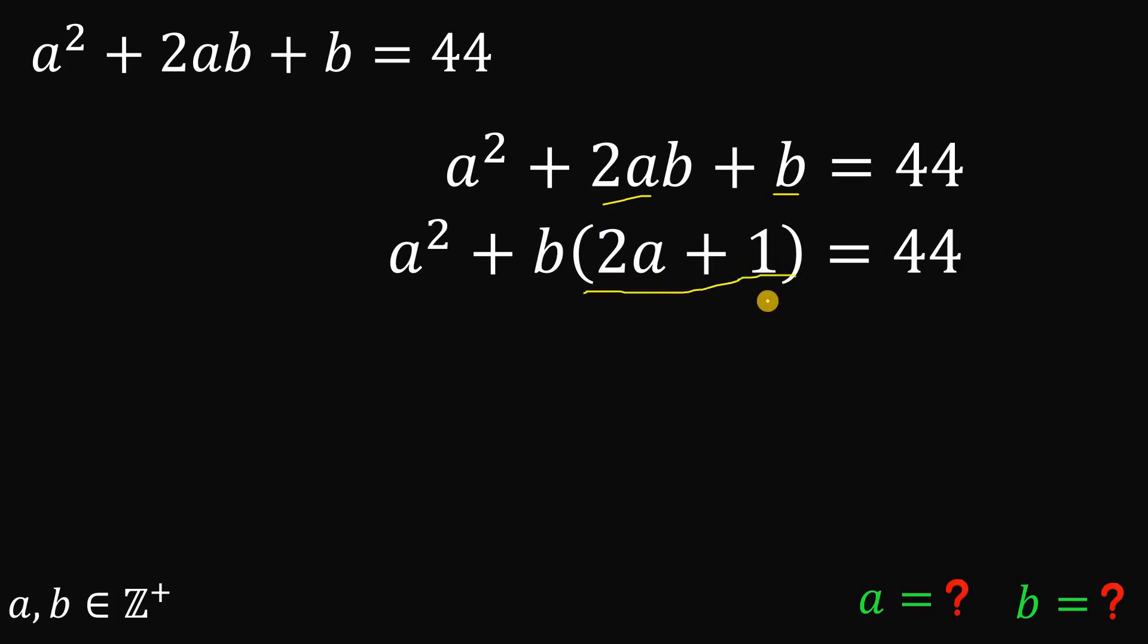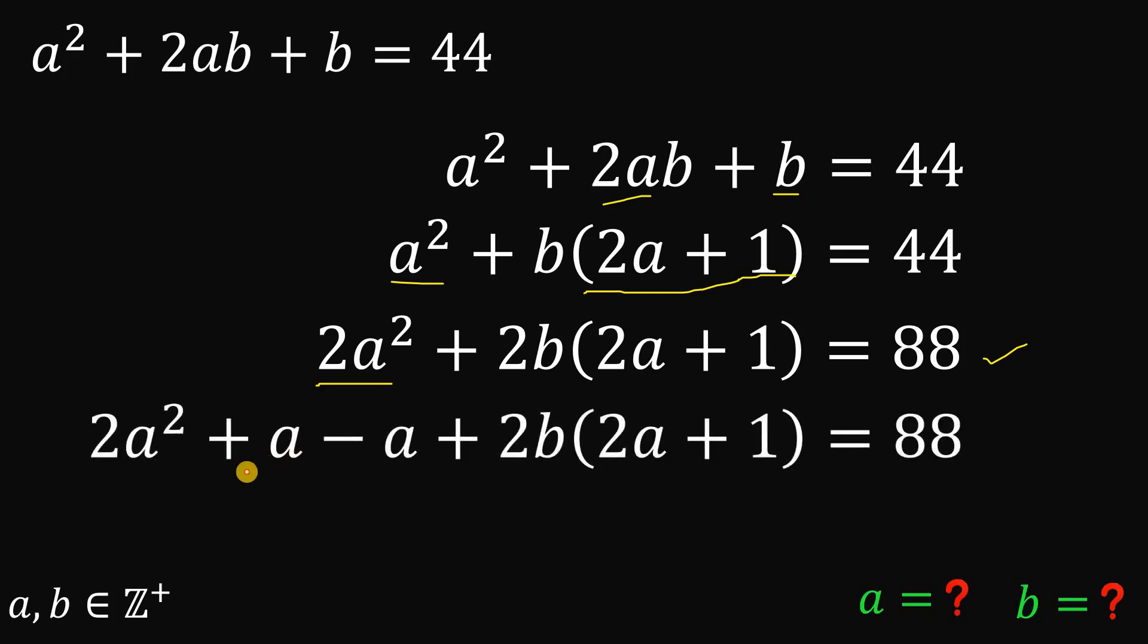Now, this will give us a clue that we can rewrite the other term as a factor of 2a plus 1. And the question is how to do that. So first, we have a squared and we need 2a. So what we're going to do is multiply both sides by 2. So we have 2a squared plus 2b multiplied by 2a plus 1 equals 88. Now we have 2a squared. If we have an a here, we can factor out a and we have 2a plus 1. So let's add a and subtract a. This is just 0. This is legal.